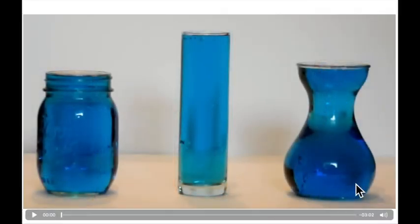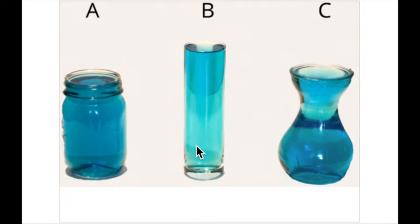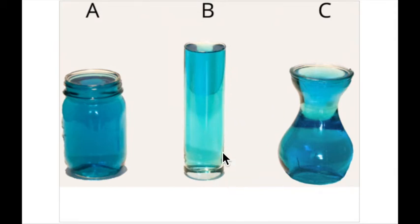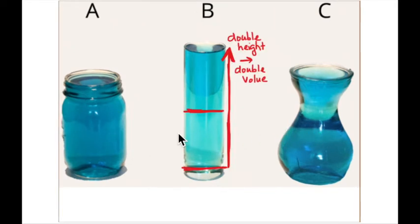The point of this video is that only container B has volume proportional to height — meaning you can measure the height and determine the volume, because they are proportional. That's not true for the other two containers. If the height doubles in B, the volume has doubled, but that's not true for A.